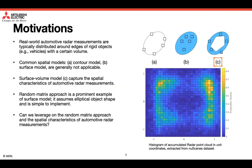Common spatial models used for extended object tracking, like the contour model as illustrated in sub-figure A, and the surface model as illustrated in sub-figure B, are generally not applicable. What may work well is the surface volume model, which can capture the spatial characteristics of automotive radar measurements. The random matrix approach is a prominent example of surface model. It assumes elliptical object shape and is simple to implement. Then an interesting research question arises: can we leverage on the random matrix approach and the spatial characteristics of automotive radar measurements?